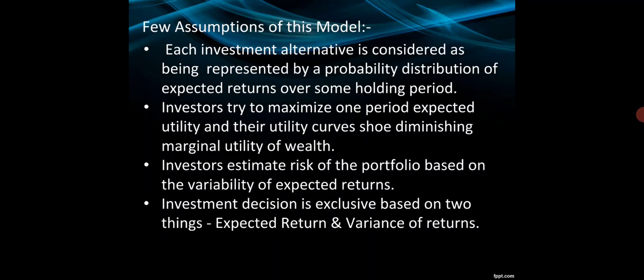The fourth assumption: investment decisions are exclusively based on two things. The first is the expected return that the security provides to each investor, and the second is the variance of return — meaning the level of risk attached to the particular security. The investor will focus on these two criteria in a proper manner, and on that basis a rational decision will be taken for the selection of securities for the portfolio.